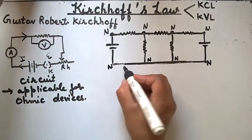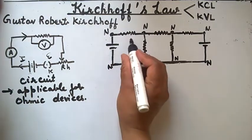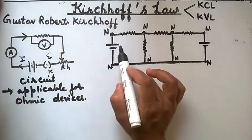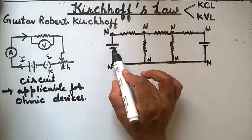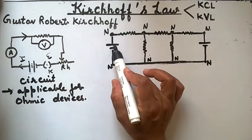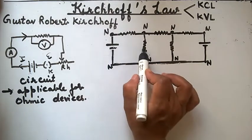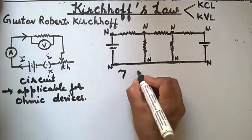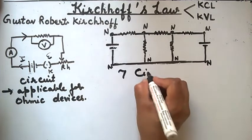Let's look at this network and count the number of circuit elements connected in it. Here there are a total of seven circuit elements.